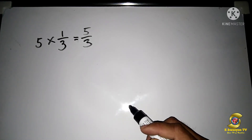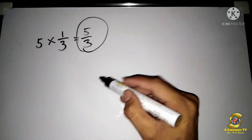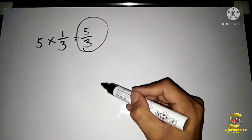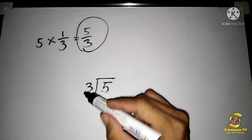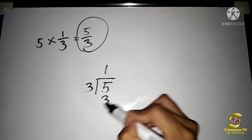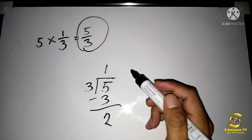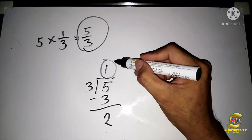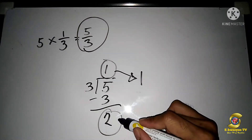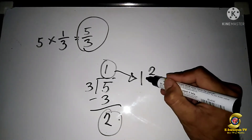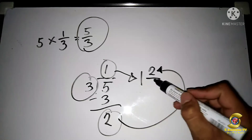Five over three is not the final answer — we have to simplify it by converting it to a mixed number. To do that, divide five by three: five divided by three is one, one times three is three, then five minus three is two. Our quotient is our whole number, our remainder is our new numerator, and our divisor is our denominator.